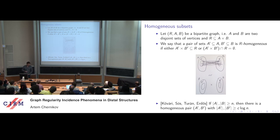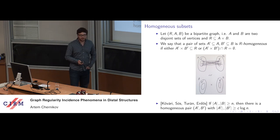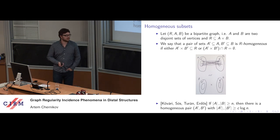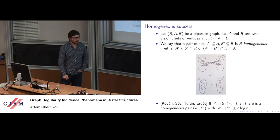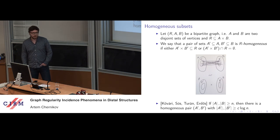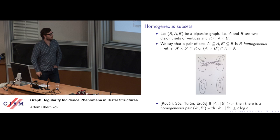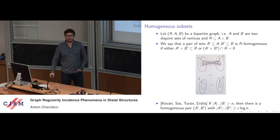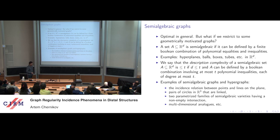A classical result in graph combinatorics due to Kővári, Sós, Turán, and Erdős says that you can always find a pair of homogeneous subsets of logarithmic size. So no matter which graph you start with, if both A and B have size N, you can always find a homogeneous pair of approximately logarithmic size. This is a basic Ramsey phenomenon. This bound is known to be optimal in general. However, if your graphs come from some geometric situation, one can do much better — and this will be the topic of my talk.